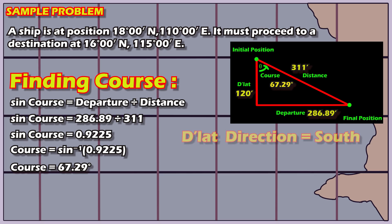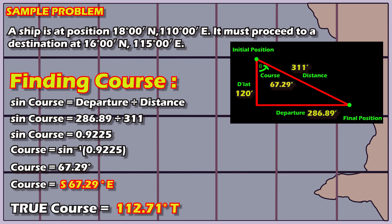Since the difference of latitude is south, and the difference of longitude is east, the course is south 67.29 degrees east. Therefore, the true course is 180 degrees minus 67.29. That equals 112.71 degrees true. Now, we have completed the plane sailing problem.